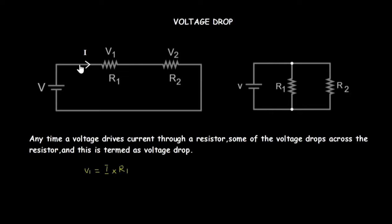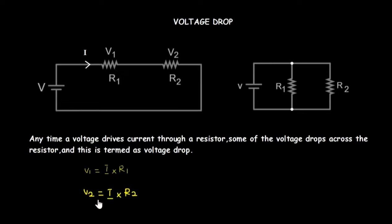This is because in a series connection, the same current flows through resistor R1 and through resistor R2. So for R2, the voltage drop V2 will be equal to the current I multiplied by the resistance R2. And remember, for a series connection, when you sum the individual voltage drops it should be equal to the total voltage from the source.